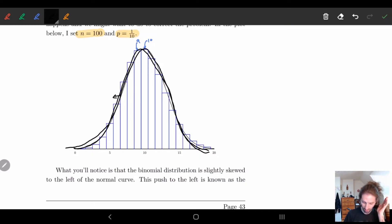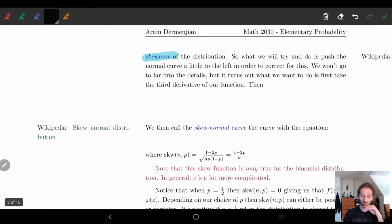That was a bad drawing, but it's hard to draw freehand. Anyway, so let's shift it a little to one direction so it actually approximates better our binomial distribution.